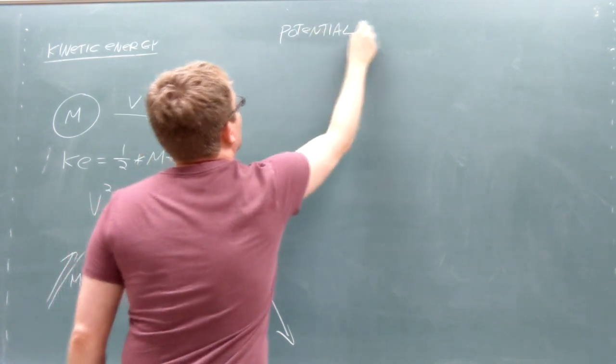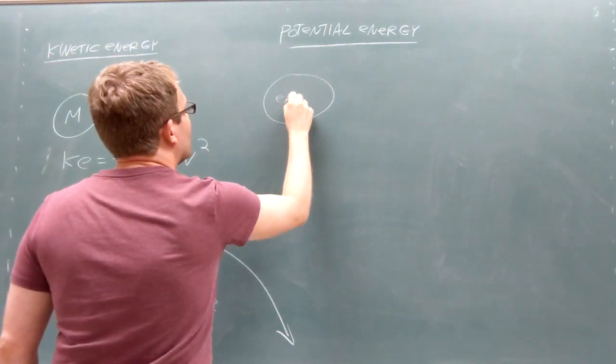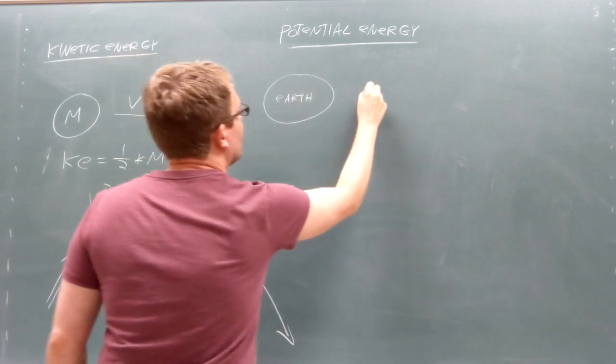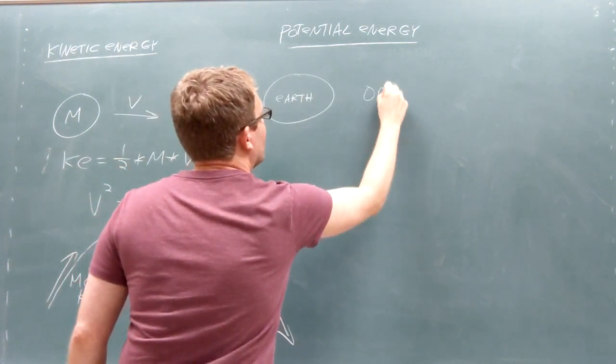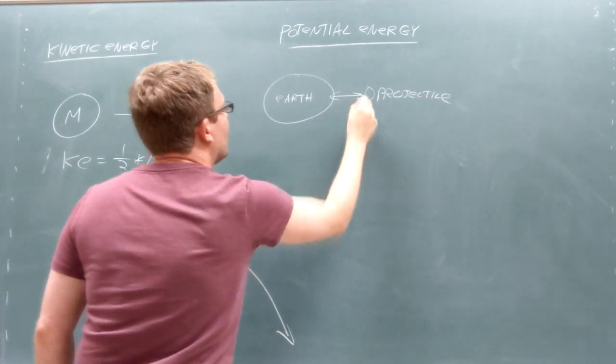The second kind of energy we need to think about is called potential energy. Potential energy is manifested as two objects interacting through a force. In this case, we're interested in the gravitational potential energy between the projectile and the Earth.